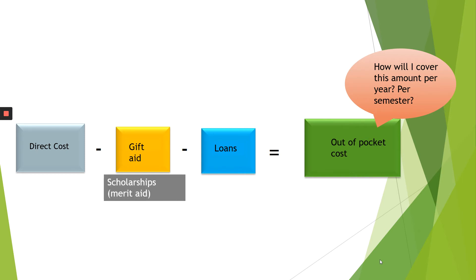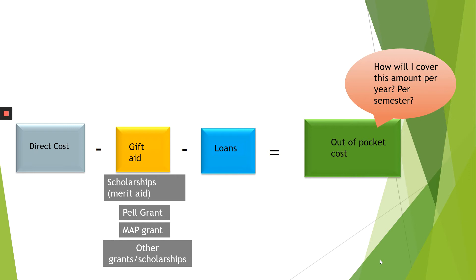Looking at gift aid, some things you'll see on an award letter include merit scholarships such as an honor scholarship, presidential scholarship, or trustees scholarship. You'll also see your Pell Grant, which comes directly from the FAFSA and is based on your family's EFC, as well as the MAP Grant, which comes from the state of Illinois and is again based on your EFC — so these are need-based grants. You'll also see other grants and scholarships provided directly by the college or university. If you've been accepted to private colleges and universities, they'll have a lot more wiggle room under grants and scholarships than a state school.